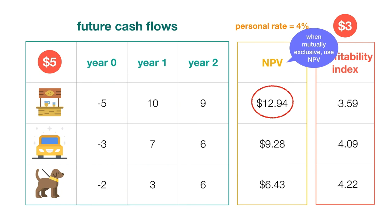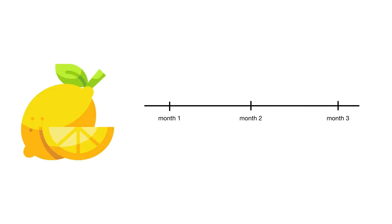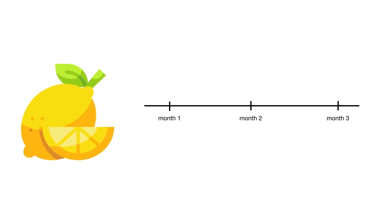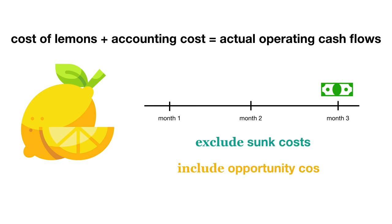Note that we don't use accounting numbers to calculate the return on our investment. Numbers used in financial statements follow accrual-based accounting, which doesn't always match our actual cash flows. For example, we may order lemons from a friend and promise to pay him in three months. Accounting would recognize the lemons' expense at the time we receive them, while in finance we only care about when the cash is paid. We would need to add back the cost of the lemons to our accounting operating income to arrive at our actual operating cash flows, working backwards from financial statement information to find the relevant cash flows. Remember to exclude sunk costs and include opportunity costs in these relevant cash flows.